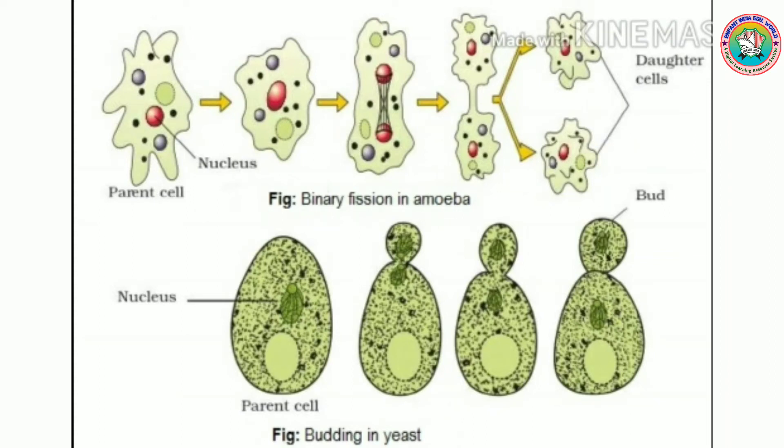Hello students, I'm your biology teacher. Today we will study about asexual reproduction in plants as well as in animals. In animals, it is carried out by binary fission, budding, fragmentation, etc.